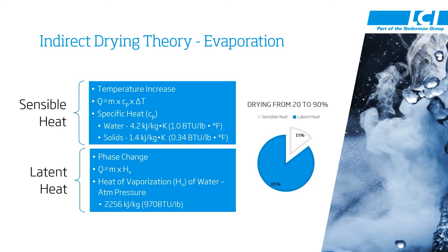In order to calculate the sensible heat, we use the equation Q — heat — equals mass, in this case the mass of sludge coming into the dryer, times Cp, the specific heat. We have to use the mass fraction of the water and the solids inside that sludge, times delta T. This delta T is the temperature from the incoming sludge to get the sludge up to boiling.